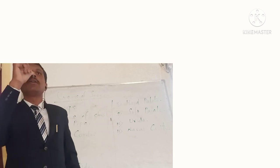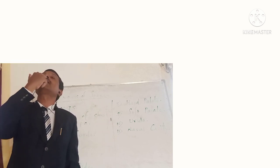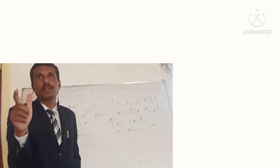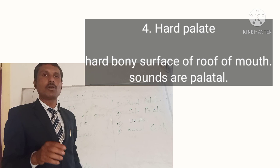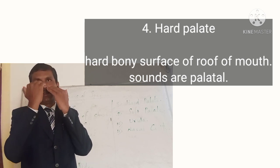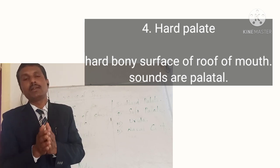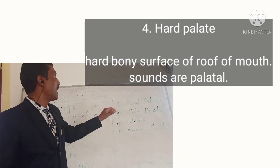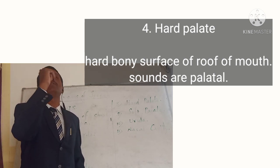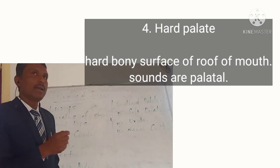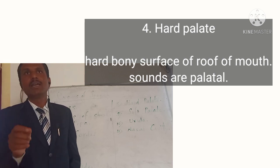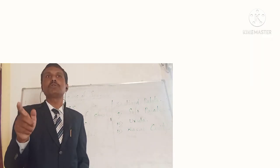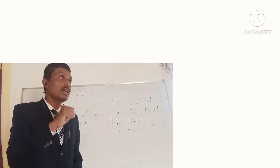After the teeth ridge, if you move your finger across the roof of your mouth, you will find a hard bony structure — this is called the hard palate. The palate on the roof of our mouth is divided into two parts: hard palate and soft palate. The hard palate is the hard bony structure. The sounds produced at the hard palate are called palatal sounds.